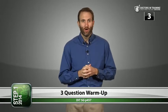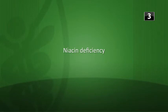Next, what vitamin deficiency results from Hartnup disease? Hartnup is a deficiency of tryptophan, which leads to niacin deficiency. Don't forget that niacin is also vitamin B3, and niacin or B3 deficiency is also the name of pellagra.